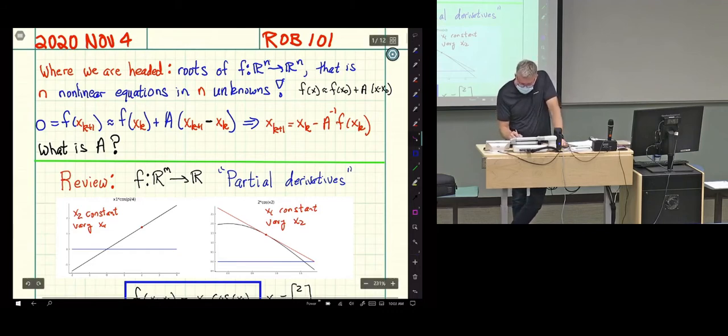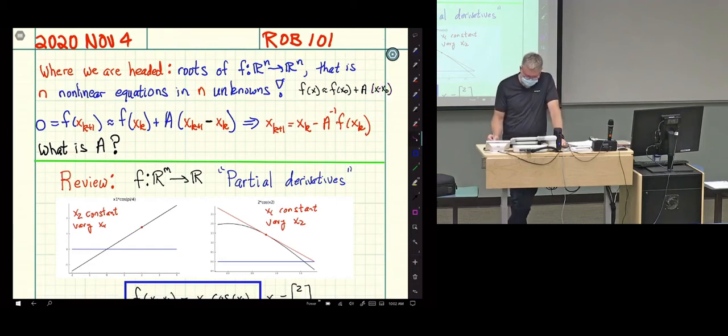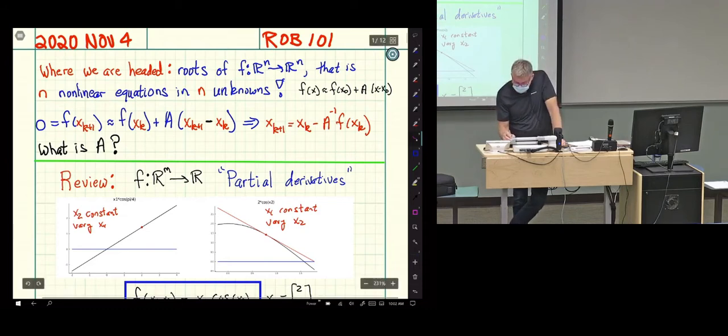What we did for n equals 1 is we found out that we could approximate the function near a given point by a constant value. Then we had a slope, and then we had the deviation of the function about x0. What we're moving towards is trying to get something similar for systems of nonlinear equations, and then we hope to replace our simple slope with a matrix.